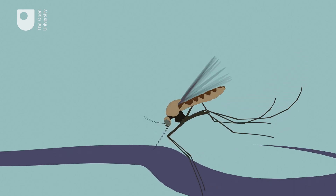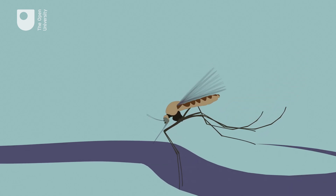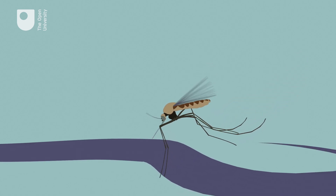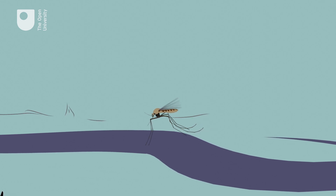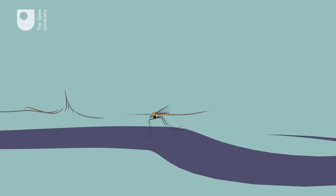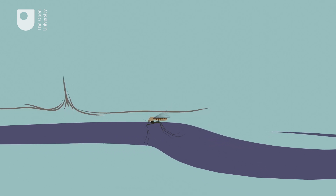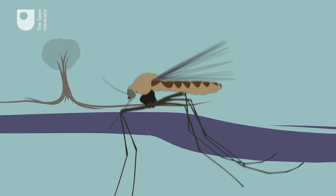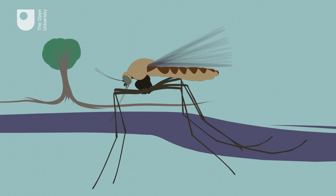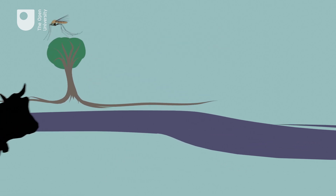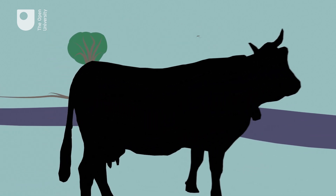While the term zoonoses applies to all diseases that are spread from animals to humans, the term vector-borne diseases applies only to those spread by an intermediate carrier. An example of an intermediate carrier is a mosquito. An example of a vector-borne disease is malaria.